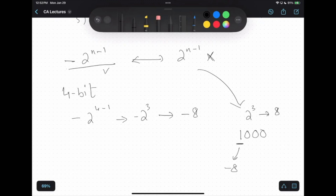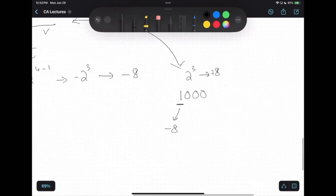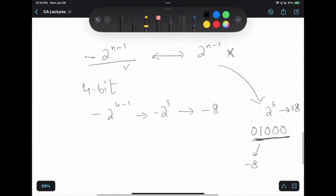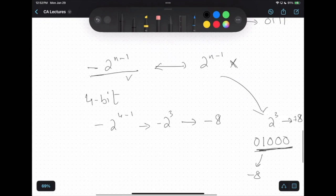We cannot represent positive 8 in 4-bits. In order to represent positive 8 in 4-bits, we need to have an additional bit. Now we can say that this is positive 8. So generally, you can represent this value, minus 2 to the power n-1, but not 2 to the power n-1.